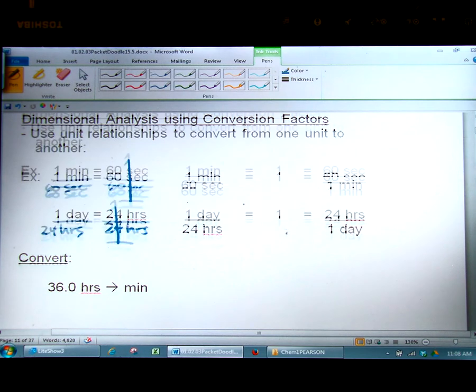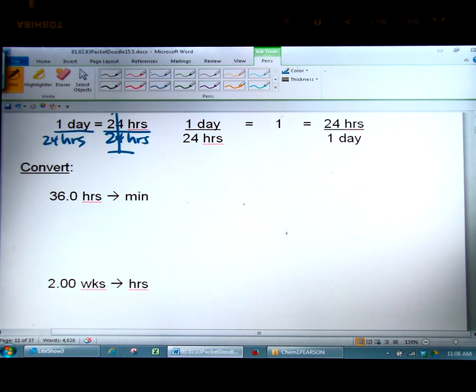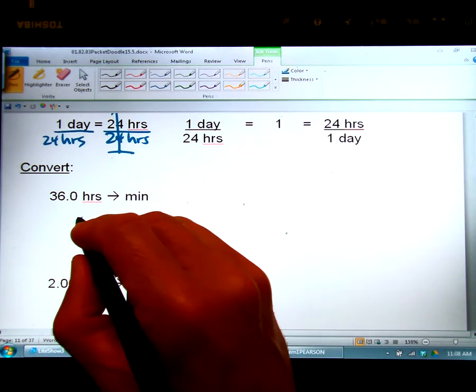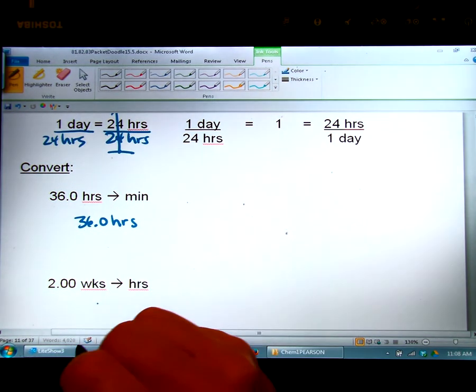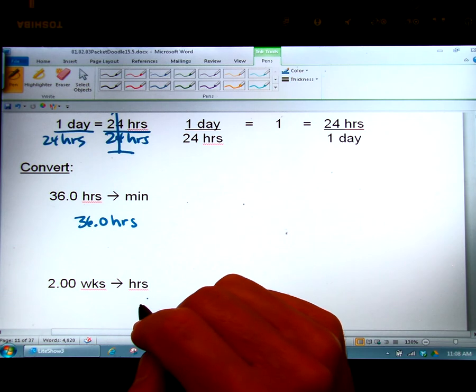Now we're going to use these conversion factors to convert one unit into another. We're going to try to take 36 hours and change it into minutes. Now I know that you could do this problem without the method I'm showing you but I'm purposely using easy examples so that when you do a harder one in the future it will make more sense.